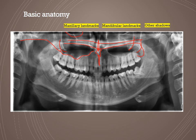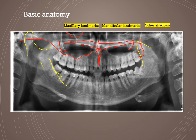For mandibular landmarks: the condyle, condylar neck, condylar head of the TMJ, sigmoid notch, coronoid process, external oblique ridge, lingular area of the mandible, and the entire mandibular canal can be traced. You also have the mental foramen, the lingual foramen — which is quite difficult to see on panoramic radiographs — and the gonial angle or angle of the mandible.